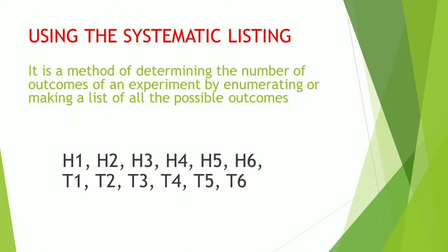If we are going to use the systematic listing, it is a method of determining the number of outcomes of an experiment by enumerating or making a list of all the possible outcomes.